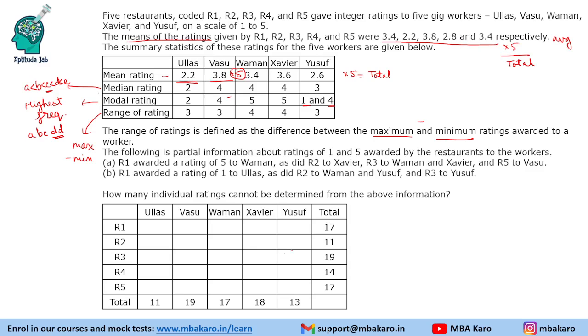We have worker-wise ratings and restaurant-wise totals. Restaurant-wise totals are 17, 11, 19, 14, and 17. Now we are given statements A and B, and using those statements we will fill in the values.